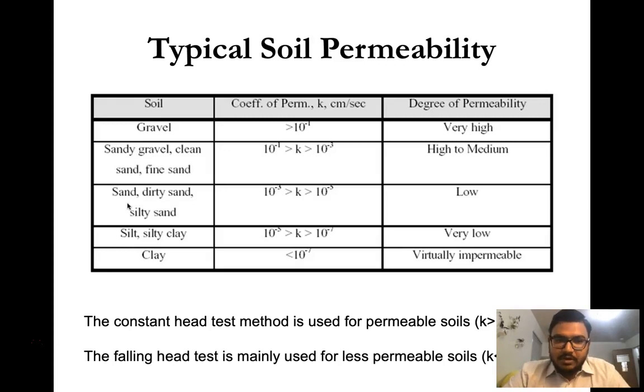This table shows the typical values of soil permeability for different kinds of soil. If it's gravel, there will be more pore space, so the degree of permeability will be very high. If it's clay, the particle size is very low, so the void and pore space will be low as well. That's why the permeability will be very low for clay soil, virtually impermeable.